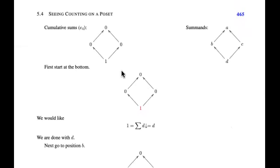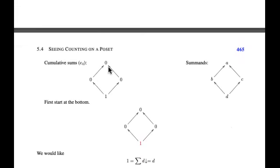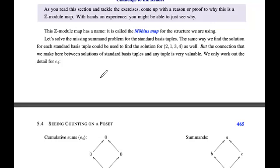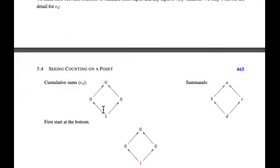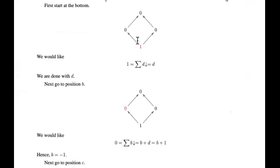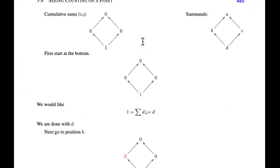Let's solve the problem for the standard basis elements — that's really all we need to get the matrix. When we were solving congruences, we solved the congruences corresponding to the standard basis elements like (1,0) and (0,1). Similarly, we solve the problem for the standard basis elements, then multiply each of those solutions by the appropriate coefficient and add them up to get the final result.